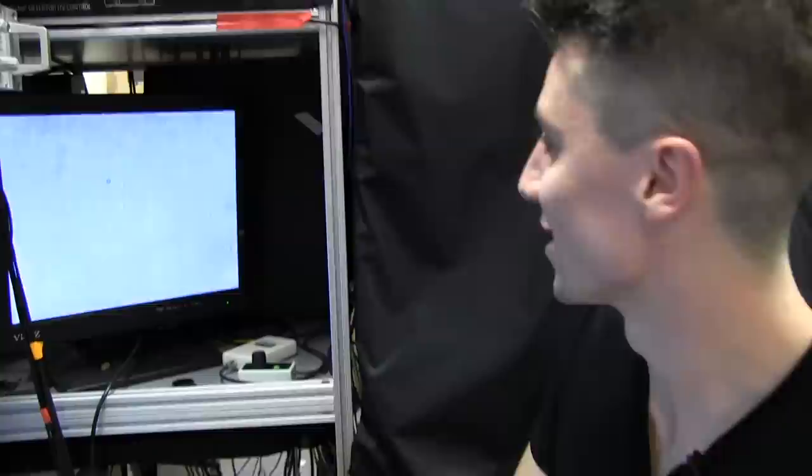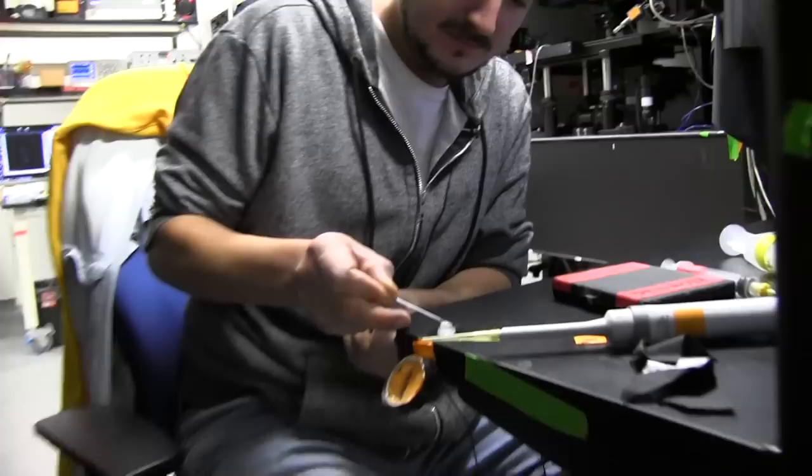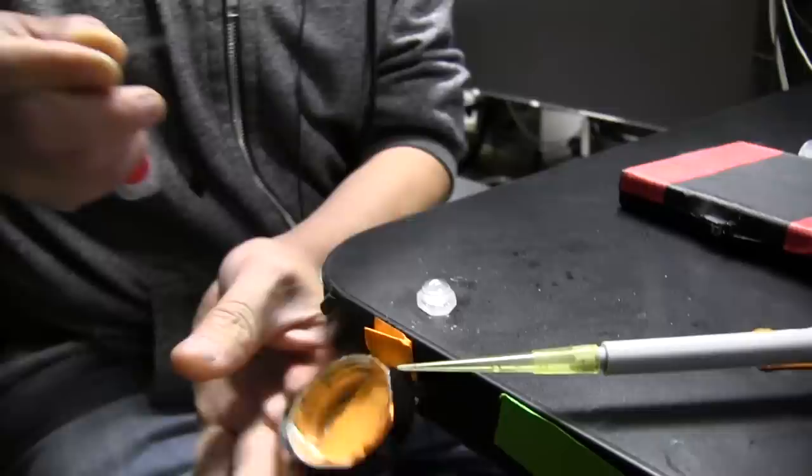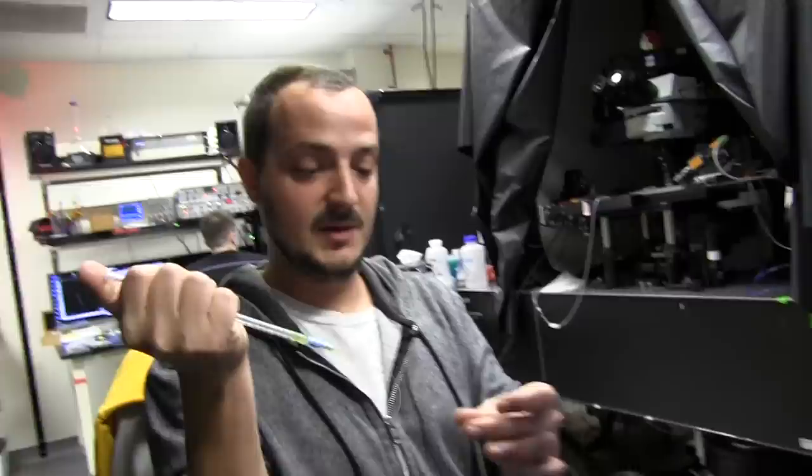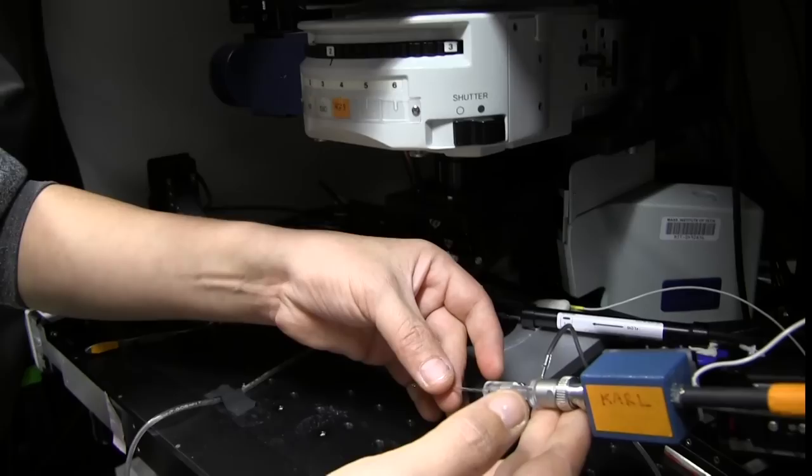So the technique that we use to record the electrical activity from these neurons is called patch clamping. The key principle is you take a piece of glass tubing, and you pull it into a little tiny hollow needle, and then you fill it with an electrolyte solution. So this glass needle becomes an electrode. And I'm gonna fill the pipette with some dye. And the glass has a really fascinating property in that it adheres very tightly to the cell membrane. This is one of the challenges to doing these experiments is you've got to make one of these pipettes. You've got to fill it with the electrolyte solution. You've got to put it on the rig.